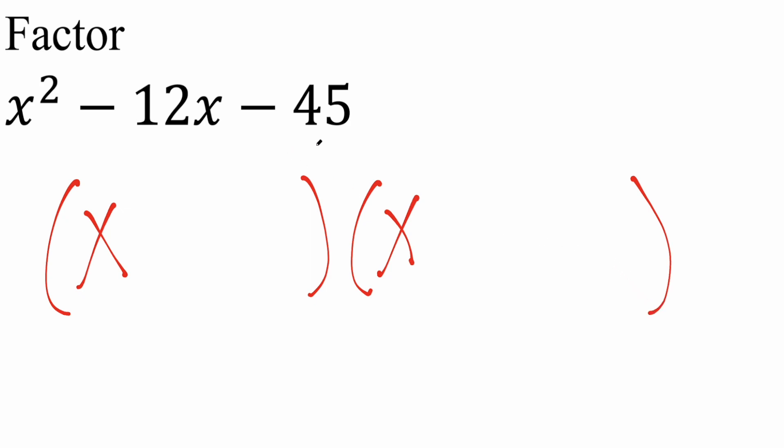Next, we think to ourselves what two numbers multiply to give us negative 45, but add to give us negative 12. Now this is where it's a little bit of trial and error.